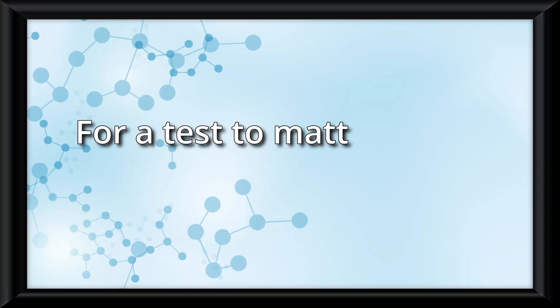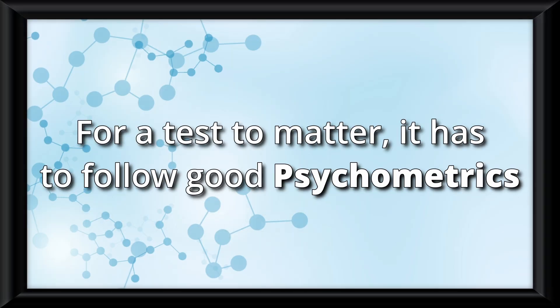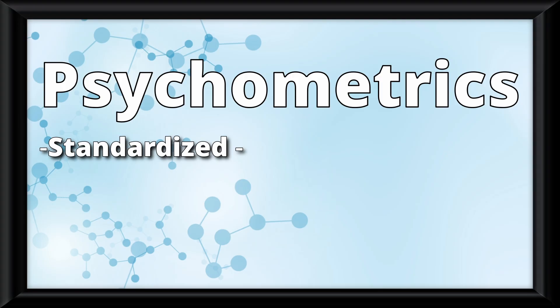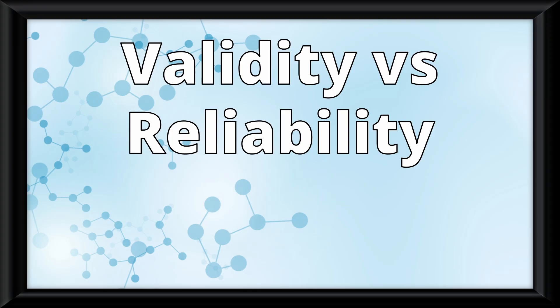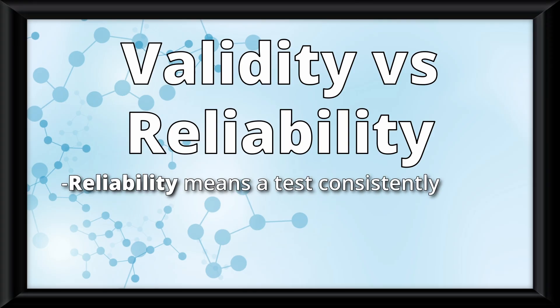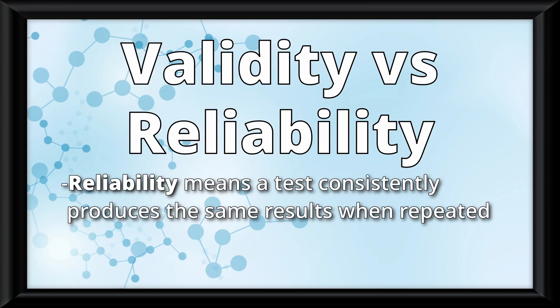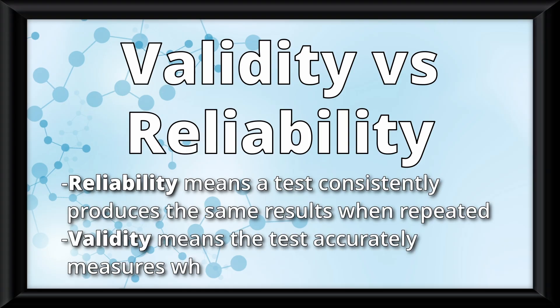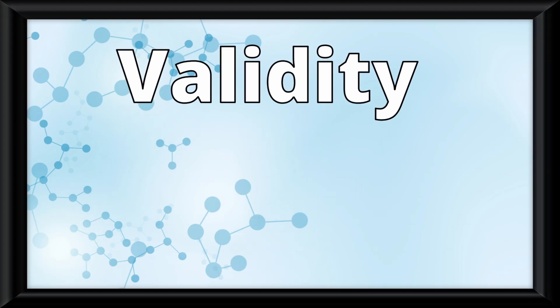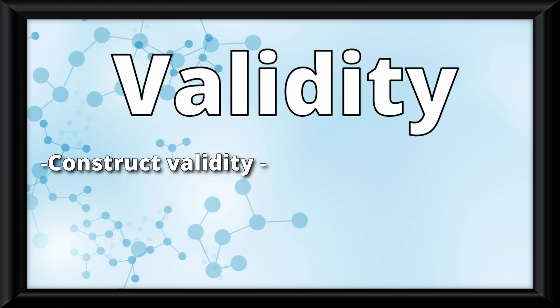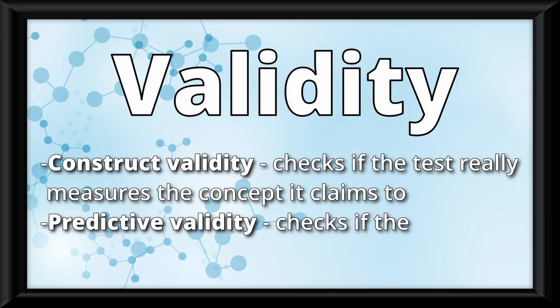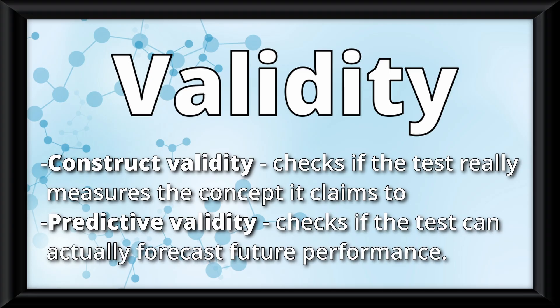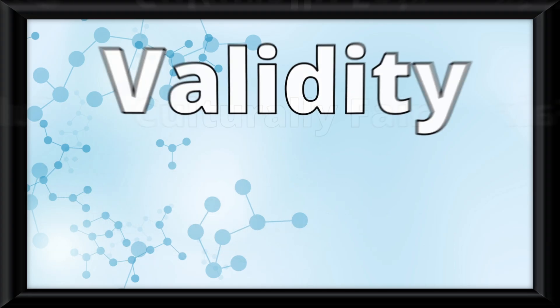Now in the present, for a test to matter, it has to follow something called good psychometrics. That means it has to be standardized, meaning everyone takes it in the same way, and it also must be valid and reliable. Speaking of which, why don't we really quickly talk about validity versus reliability. Reliability means a test consistently produces the same results when repeated, while validity means the test accurately measures what it's supposed to measure. Validity actually splits into two types: construct validity, which checks if the test really measures the concept it claims to, and predictive validity, which checks if the test can actually forecast future performance. Also, a test must be culturally fair. That's because stereotype threat can make people do worse if they're reminded of a negative stereotype about their group, while stereotype lift can make people do better if they're reminded of a positive one.